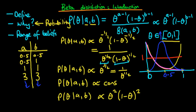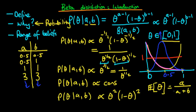You don't necessarily have to increase both a and b equally. The mean of the beta distribution — the expected value of theta — turns out to be a over a plus b. So if you increase a without increasing b, the distribution will be slanted more and more towards the value of one.